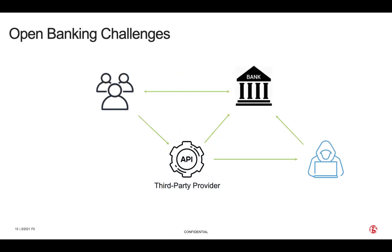Second, FAPI provides extra specifications to address weaknesses of basic OAuth and OIDC. Notably, there is concern for access token leakage, where an attacker gets hold of the token and can perform all actions permitted by it. To mitigate this threat, FAPI prescribes the usage of sender-constrained tokens, where MTLS is used between the TPP and the bank's OAuth authorization server, and the client SSL certificate is hashed and added to the access token. Anyone trying to use the token must present the same client SSL certificate used to generate it, ensuring only the original TPP can use it.